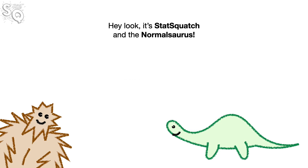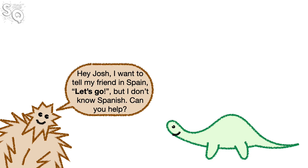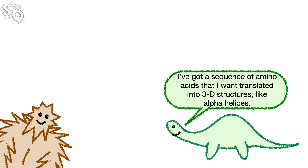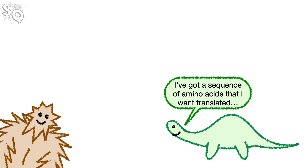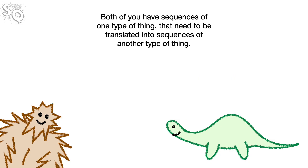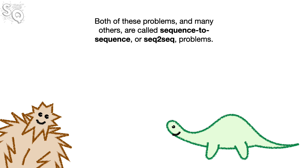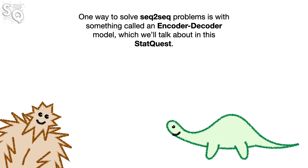Hey look, it's StatQuest and the Normalsaurus. Hey Josh, I want to tell my friend in Spain 'let's go,' but I don't know Spanish. Can you help? Sure thing. I've got a sequence of amino acids that I want translated into 3D structures like alpha helices. Don't worry, Norm, I can help. Both of you have sequences of one type of thing that need to be translated into sequences of another type of thing. Both of these problems, and many others, are called sequence-to-sequence, or seq-to-seq, problems.